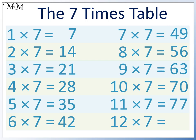Finally, 12 times 7 equals 84. We can remember this because 4 plus 8 equals 12.